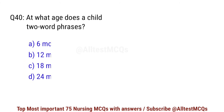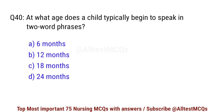Question number 40. At what age does a child typically begin to speak in two-word phrases? Correct option is C: 18 months.